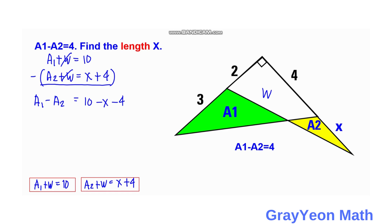It is given that Area 1 minus Area 2 is 4, which equals 10 minus X minus 4. If we rearrange this, 4 equals 10 minus X minus 4, so X equals 10 minus 4 minus 4. Therefore, X equals 2 units.